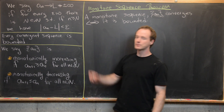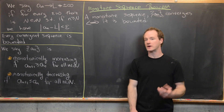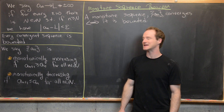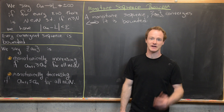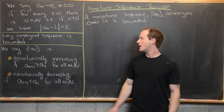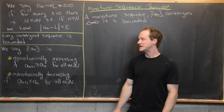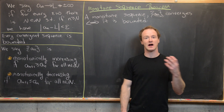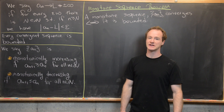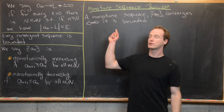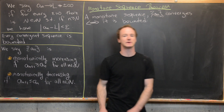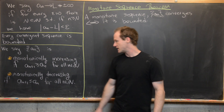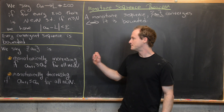We also proved earlier that every convergent sequence is bounded. Today we want to look at the notion of a monotone sequence and then prove that a monotone sequence converges if and only if it is bounded.